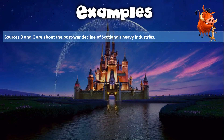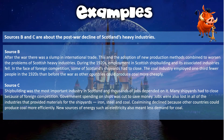Here's another example related to history — from the actual exam. Sources B and C are about the post-war decline of Scotland's heavy industries, from the Scottish section of the World War I topic. Source B says: 'After the war there was a slump in international trade. This and the adoption of new production methods combined to worsen the problems of Scottish heavy industries. During the 1920s employment in Scottish shipbuilding and its associated industries fell. In the face of foreign competition some of Scotland's shipyards had to close. The coal industry employed one third fewer people in the 1920s than before the war as other countries could produce coal more cheaply.'